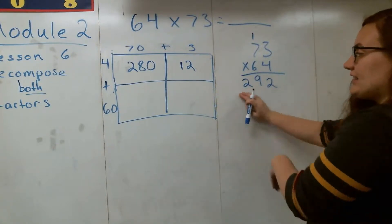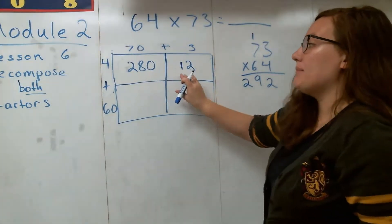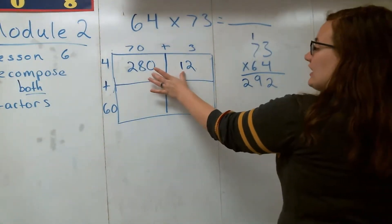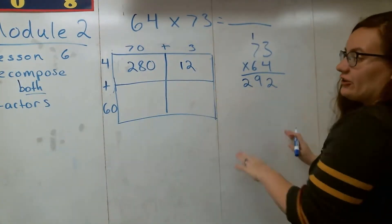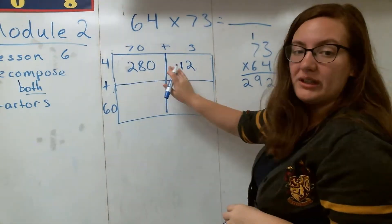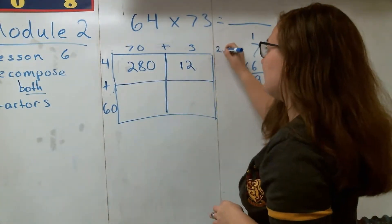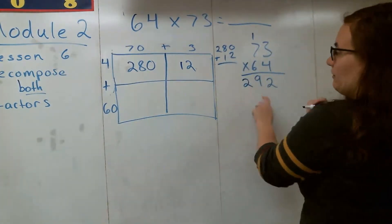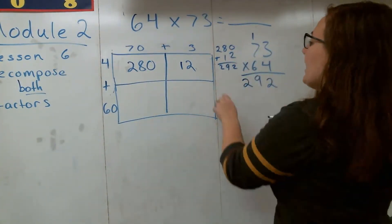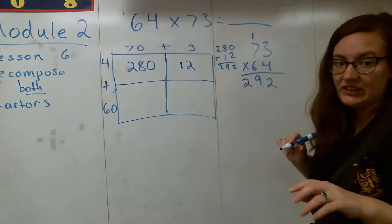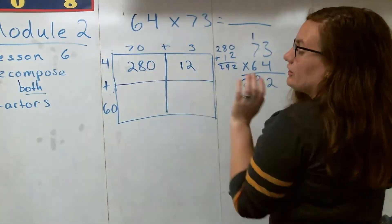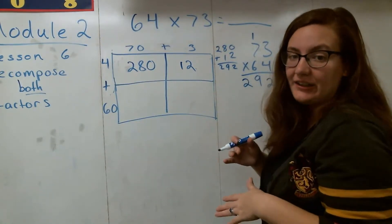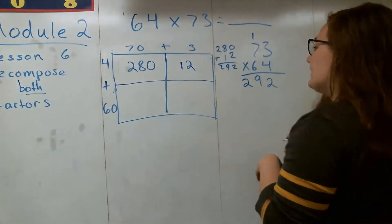What you're going to notice is that this partial product does not yet match the other partial product — this is just a broken-down version of it. What I need to do with these two numbers is add them up to get that number. When I add them up, this number matches. The reason why we do this is we break it down into smaller parts, which makes it easier to add up and find our answer.